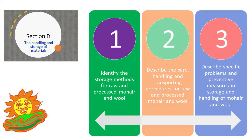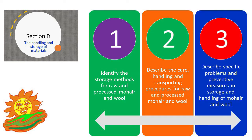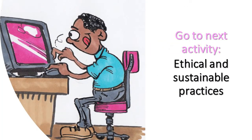In this section we have looked at how to store raw and processed mohair and wool, the care that must be taken in handling and transporting mohair and wool, and specific problems that can arise and what can be done to prevent damage. We have now reached the end of Section D. Before you continue, complete tasks 8 and 9 in your workbooks. You will find the answers by reading through Section D in your participant handbook. After completing tasks 8 and 9, you may continue to Section E, which is all about how we can work ethically and sustainably in the mohair and wool factory.